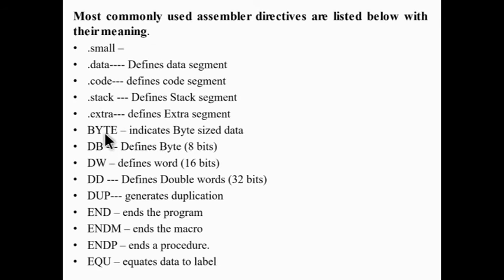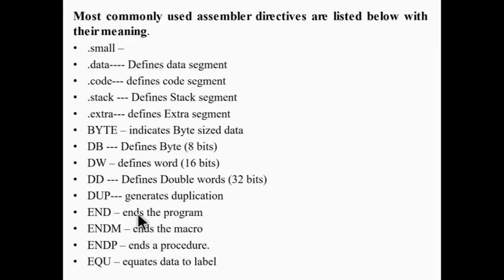Byte — indicates byte-sized data. .db — define byte, 8 bits. .dw — define word, 16 bits. When you want to assign a large number of values, .dd — defines double word, 32 bits. .dup — generates duplication. .end — ends the program. .endm — ends the macro. .endp — ends the procedure.